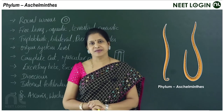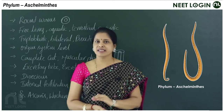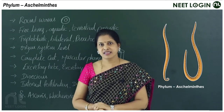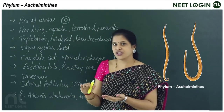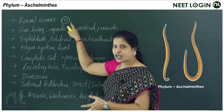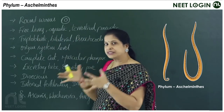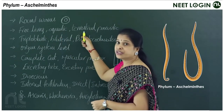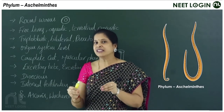The next phylum, Aschelminthes, also referred to as Nematoda in some books, contains pseudocoelomate organisms commonly called roundworms. In cross-sectional view they appear round. They show diversity in living — some are free-living aquatic or terrestrial, and some are parasites on plants and animals.